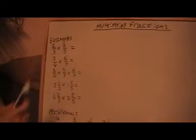Basically what you do is you multiply the two denominators and you multiply the two numerators which is very easy and then obviously you simplify the fraction if you can. So let's do some examples.